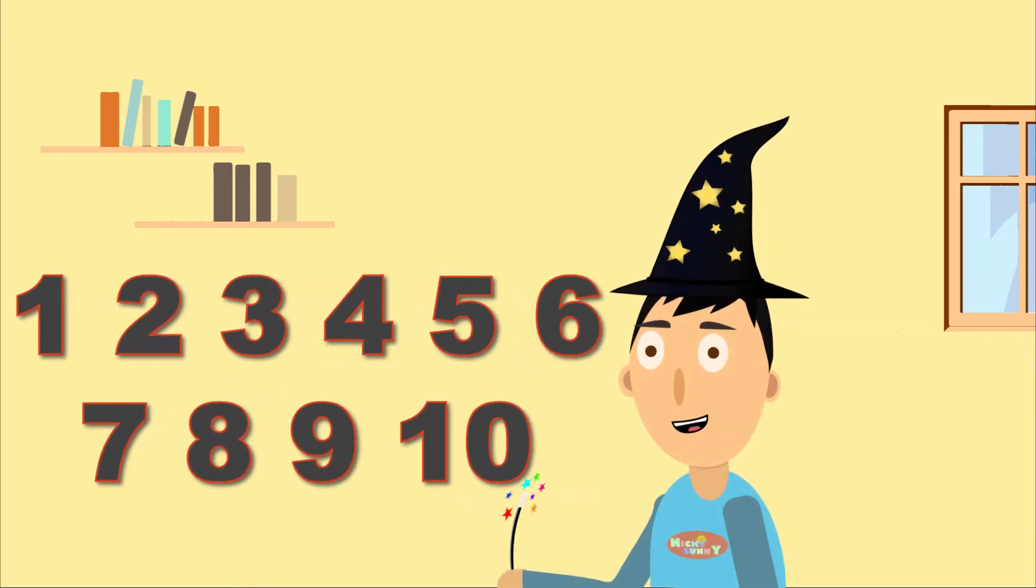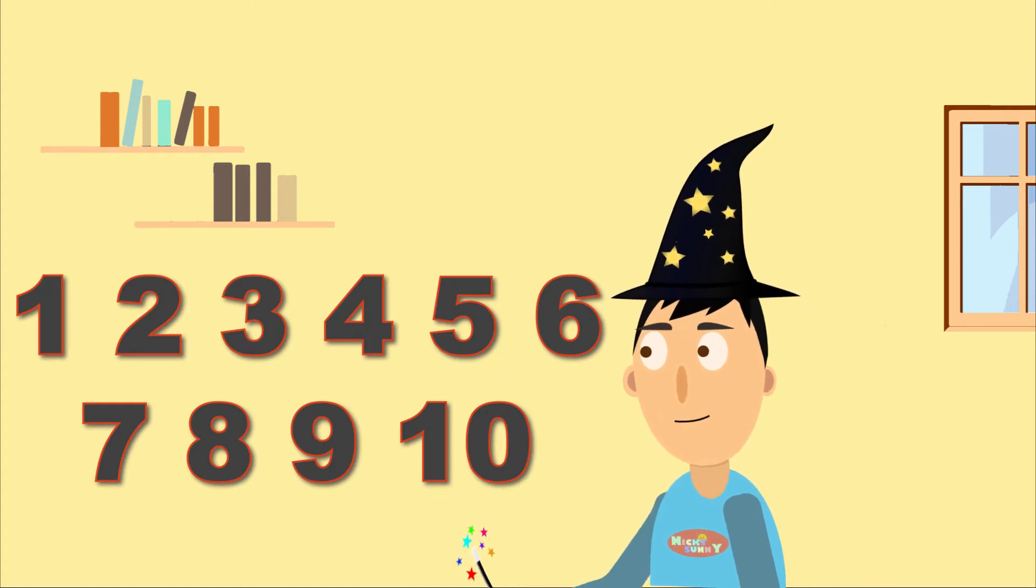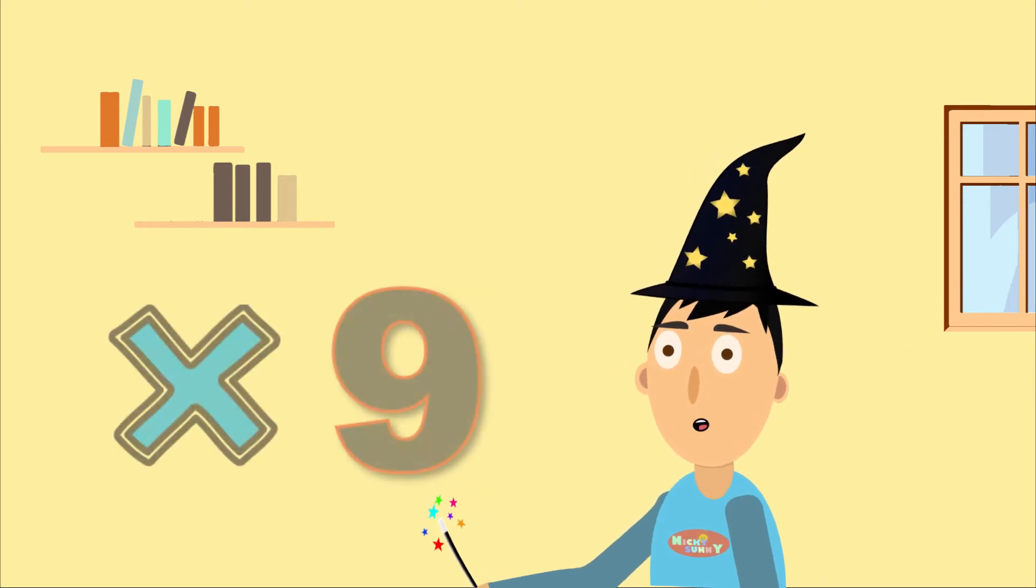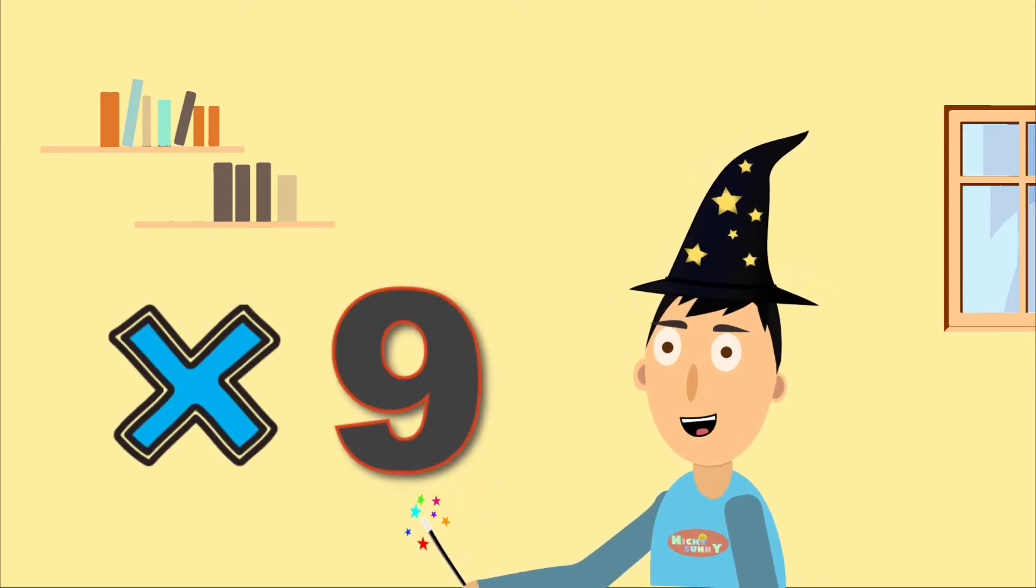Think of a number between 1 and 10. Got the number? Multiply that number times 9. You can pause if you wish.